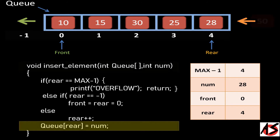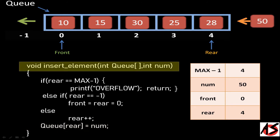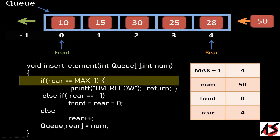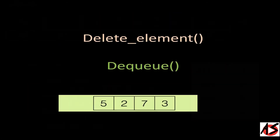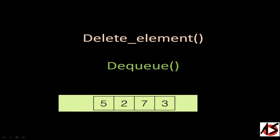Now if we want to insert one more element, 50, into the Queue, the rear value becomes 4 which equals max minus 1, that is 4. This means the Queue is full and we cannot insert any more elements.